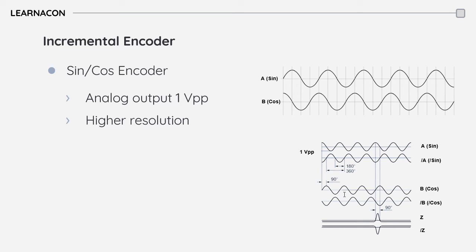Overall, sine-cosine incremental encoders offer high resolution and accuracy, making them suitable for high-precision applications such as robotics, machine tools, and aerospace. However, they are more expensive than other types of encoders and require more complex processing electronics.